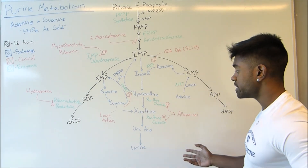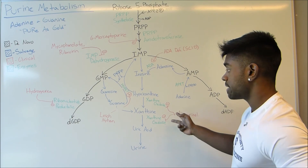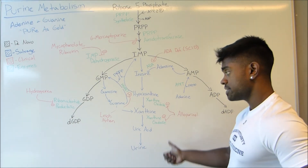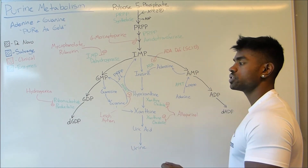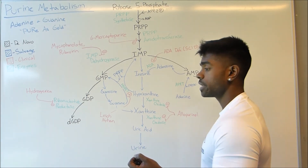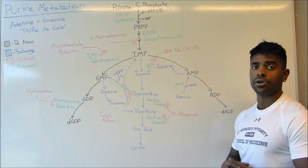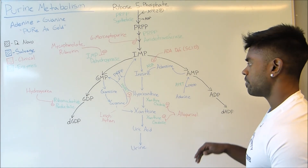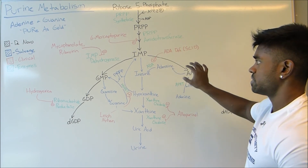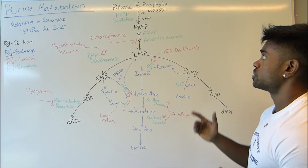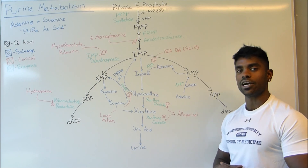Gout can actually be treated with allopurinol. Allopurinol is going to inhibit xanthine oxidase, and since gout involves increased levels of uric acid, we want to stop this overproduction of uric acid and stop the formation of monosodium urate crystals — so allopurinol is commonly prescribed. That pretty much sums up purine metabolism in a nutshell. The main things to keep note of are Lesch-Nyhan, allopurinol, and of course the enzymes that can be associated with each of the drugs shown in this diagram. Thanks for watching — if you have any questions, please throw them below, and as always please like, comment, and subscribe.